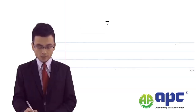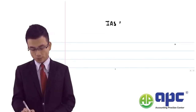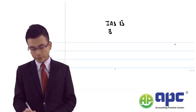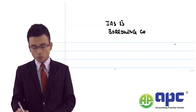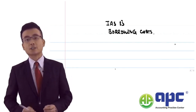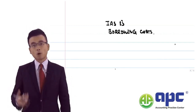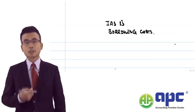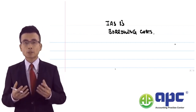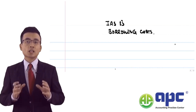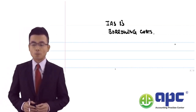Welcome to IAS 23, or International Accounting Standards 23. We'll be covering borrowing costs — specifically, if we build a particular asset and borrow funds from the bank, the interest expense paid can be capitalised if certain criteria are met.